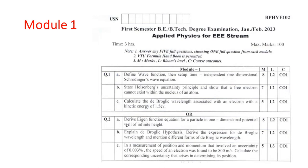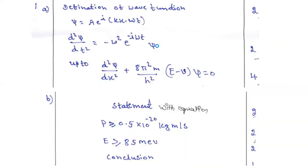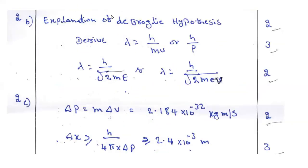Second part, module 1. Derive eigenvalue equation for the particle in one dimensional potential wall of infinite height, question number 2A. Let's see how to answer this. Anyway, we require the de Broglie hypothesis. It carries the weightage of two marks.